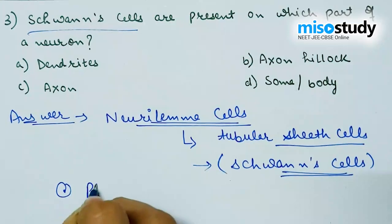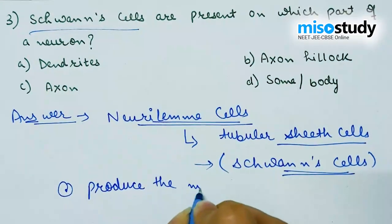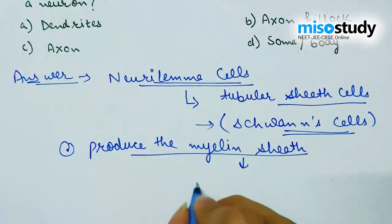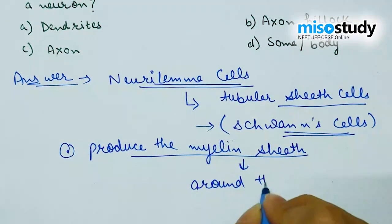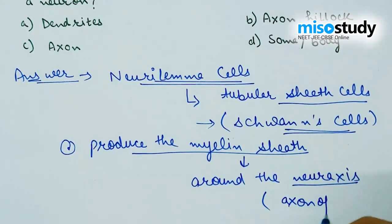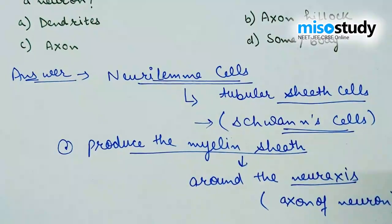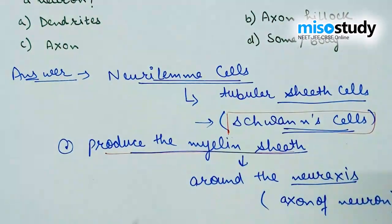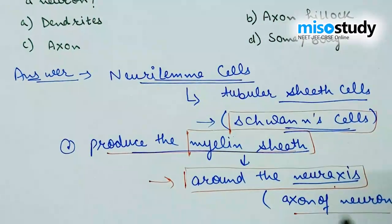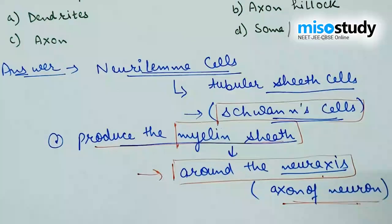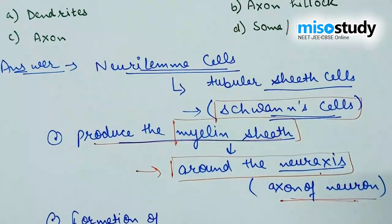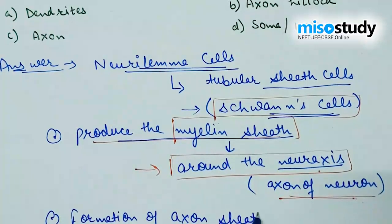What are the various functions of Schwann cells? They generally help to produce the myelin sheath around the neuro-axis. The neuro-axis is the axon of the neuron. Apart from that, Schwann cells also help in the formation of the axon sheath.